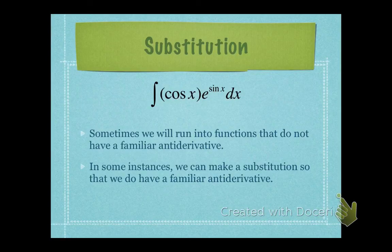Sometimes we're going to run into functions that do not have a familiar antiderivative. In the last two examples, we used the power rule and our knowledge of trig derivatives to find antiderivatives. But looking at the indefinite integral on the screen — cosine x times e to the power of sine x — an antiderivative probably doesn't pop into your head right away. So what we can do is make a substitution to more easily find an antiderivative.